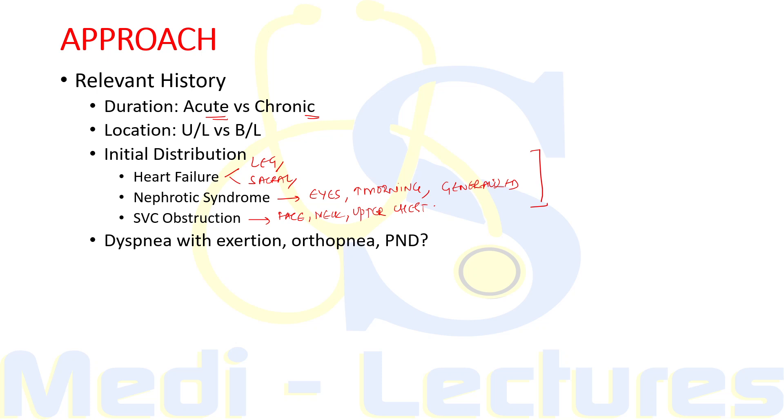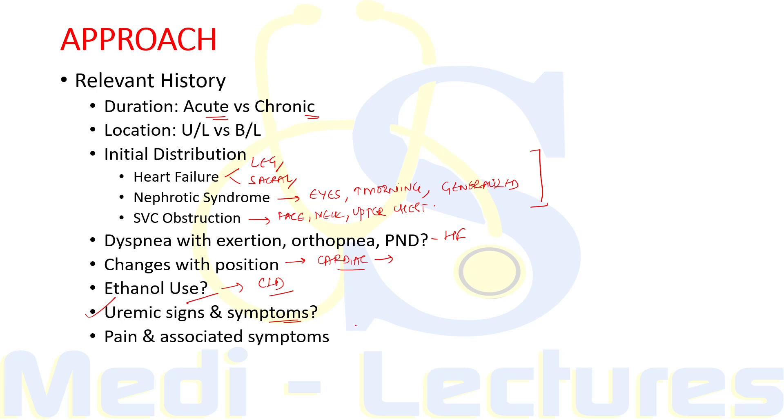Then we will ask about any dyspnea with exertion, orthopnea, or history of paroxysmal nocturnal dyspnea. This will be suggestive of heart failure as the cause. Ethanol use can identify chronic liver disease as the underlying cause. If the edema is changing with position, cardiac edema becomes prominent in the dependent position. So in standing, it will be in lower limbs, while in supine position, it will be in the presacral area. We will ask whether the patient has any uremic symptoms like decreased appetite, nausea, vomiting, any features suggestive of encephalopathy. Then pain or associated symptoms can be present in thrombophlebitis, cellulitis, DVT.